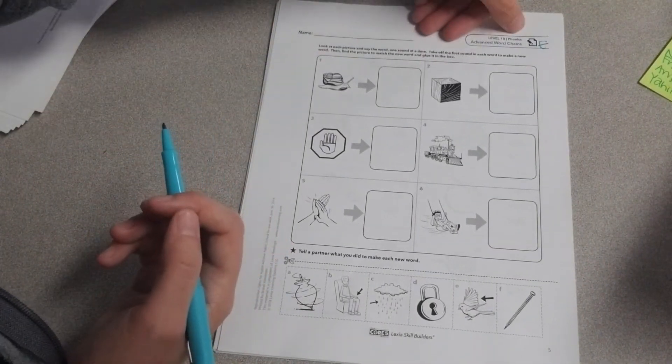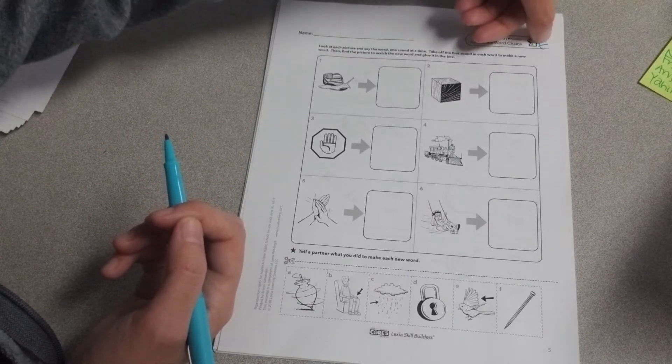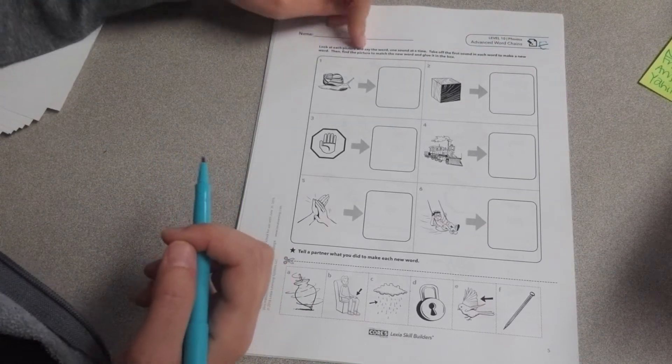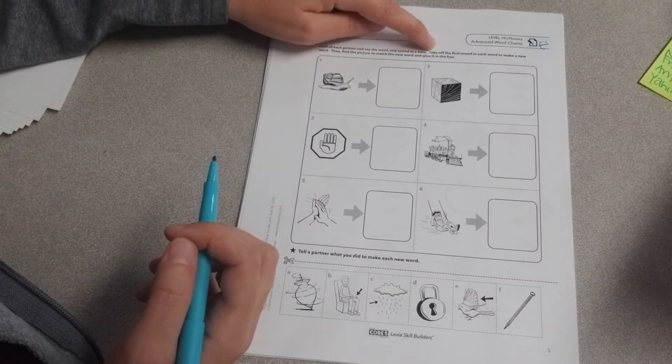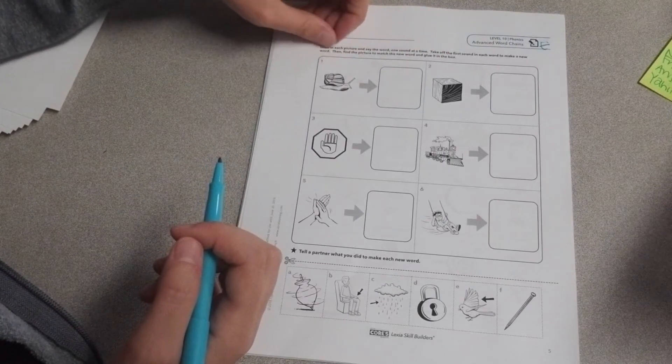Okay scholars, this is Level 10 Phonics Advanced Word Chains Sheet E. You're going to look at each picture and say the word one sound at a time. Take off the first sound in each word to make a new word.